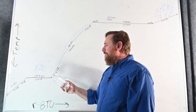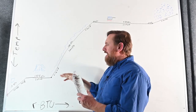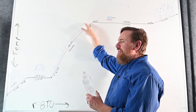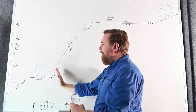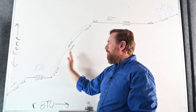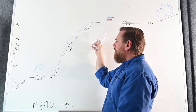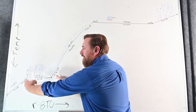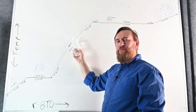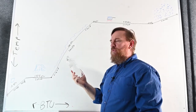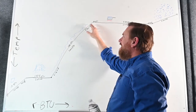Then we have sensible heat, going from 32°F liquid all the way up to 212°F liquid. You can see we significantly changed in temperature, but there was very little BTU difference between these two points — it's 180 BTUs. It's larger than the 144 here, but this is still only sensible heat. This is just simply water.